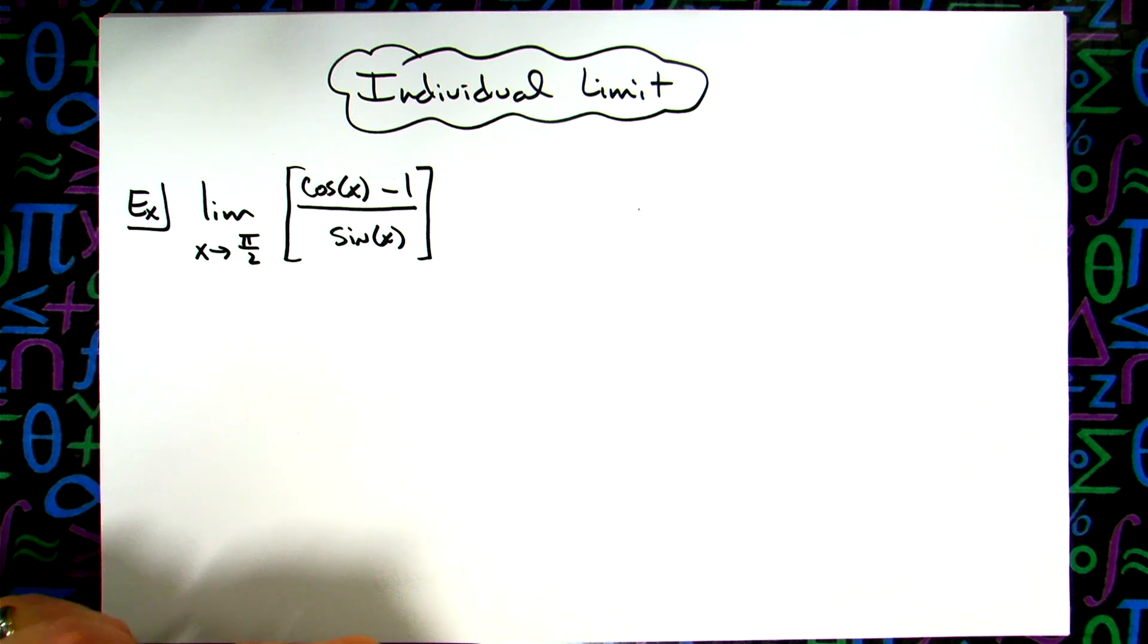Now with any limit problem the very first step that you should always do is a direct substitution, because if you are successful at doing a direct substitution and coming up with a numerical value then that's the way we want to go.